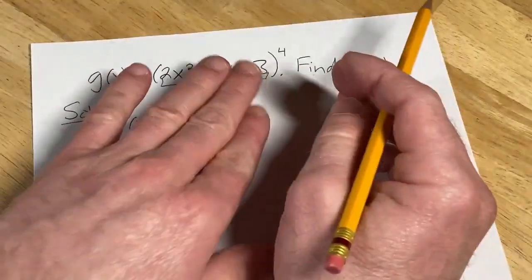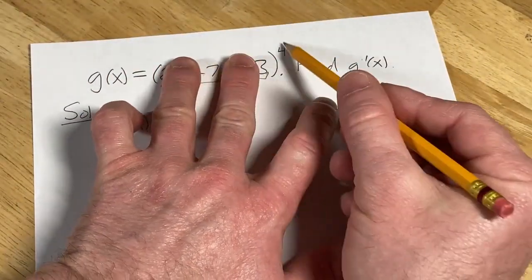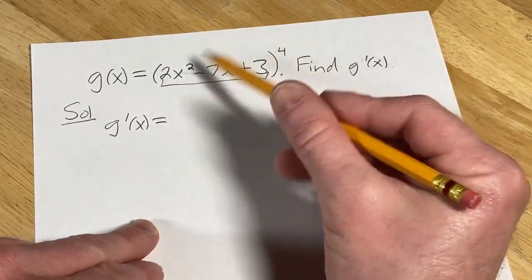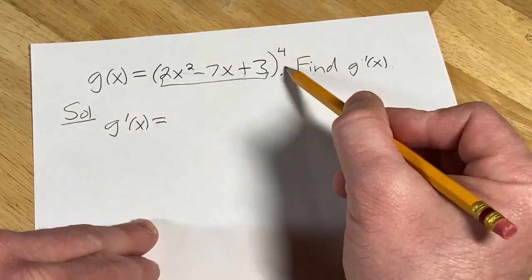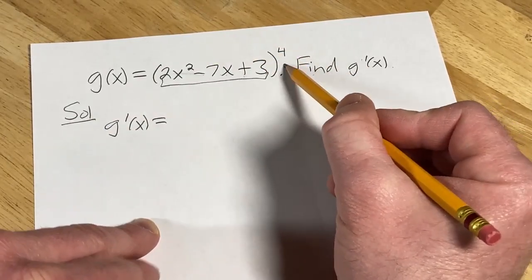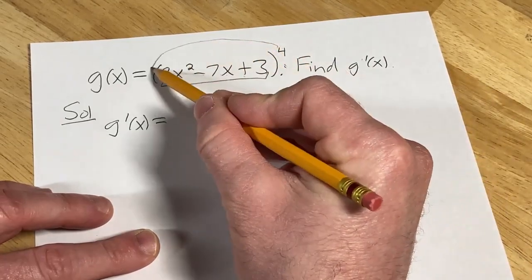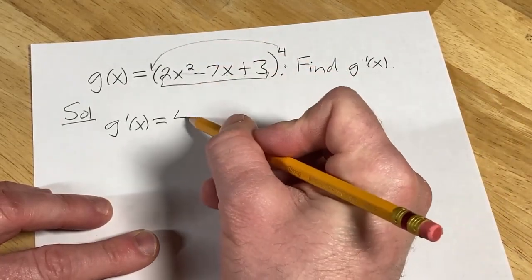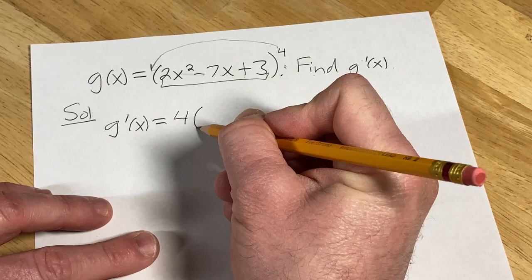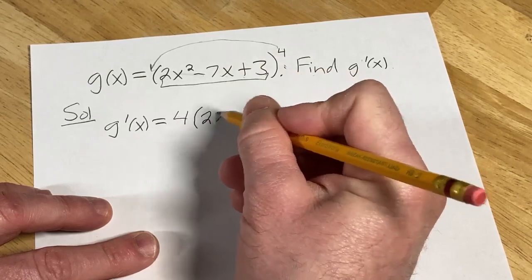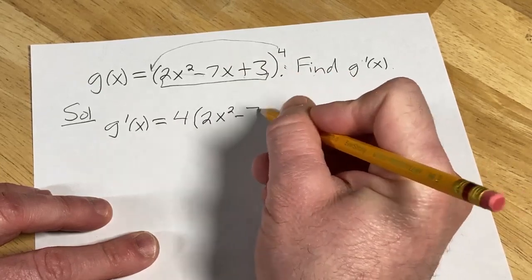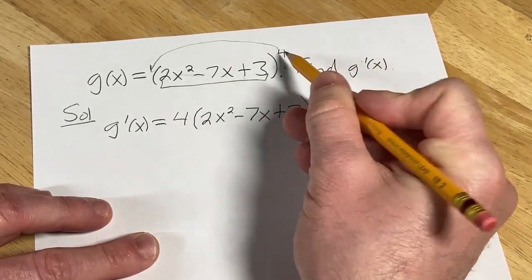Then you evaluate it at the inside and multiply by the derivative of the inside. So you bring down the 4—that's the power rule taking the derivative of the outside—(2x² - 7x + 3), then subtract one from the exponent so you get 3, times the derivative of this inside piece.